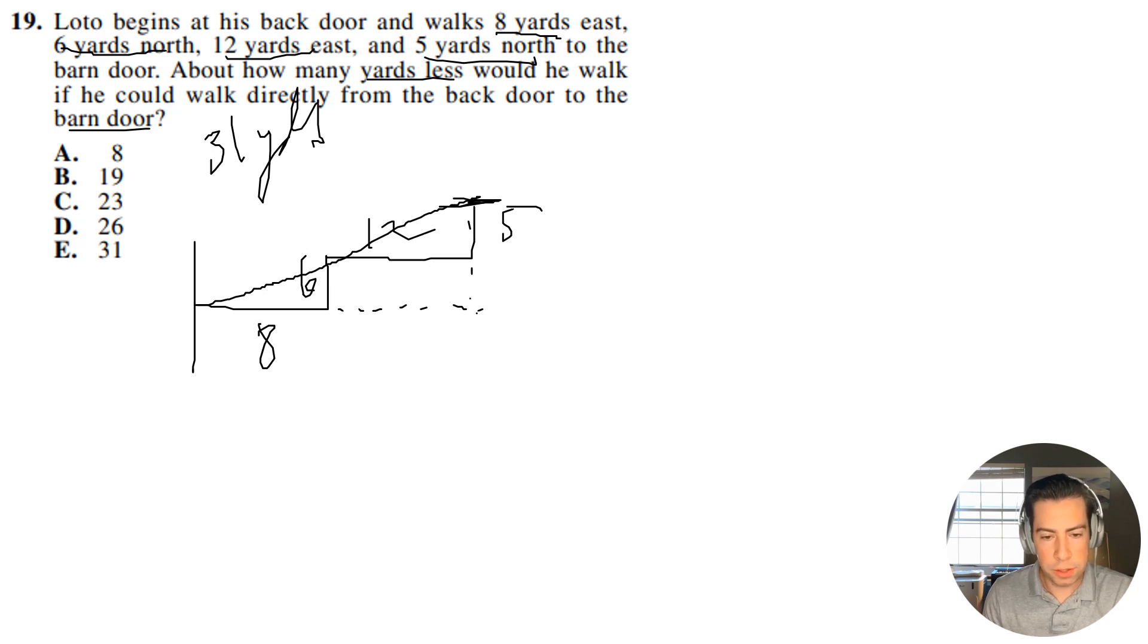So the height of the triangle, we'll call this B, and we'll call this A, kind of like for the Pythagorean theorem, A squared plus B squared equals C squared. So B is going to be 5 plus 6, which is going to be 11. And then A is going to be 8 plus 12, so that's going to be 20.